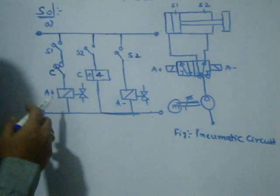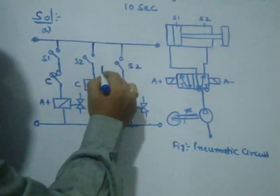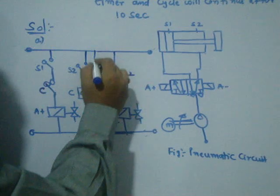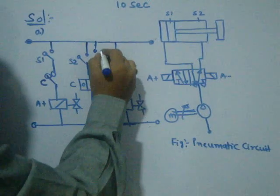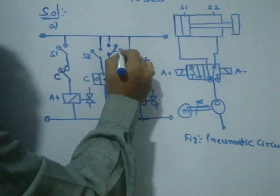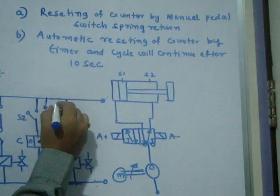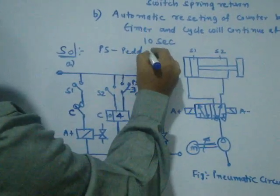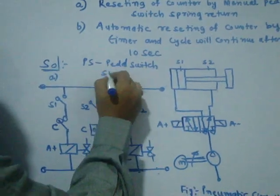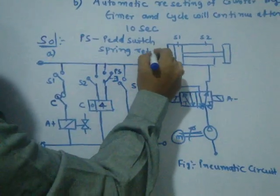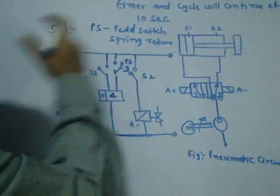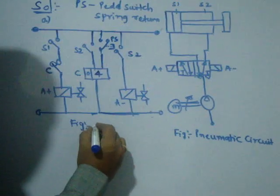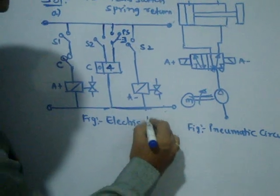How to reset this? The reset button is here. How to start the second cycle? By using the spring return push button — that is called a paddle switch, P-S. As soon as you press it by leg or hand and release it, the second cycle will start. This is called the electric ladder.